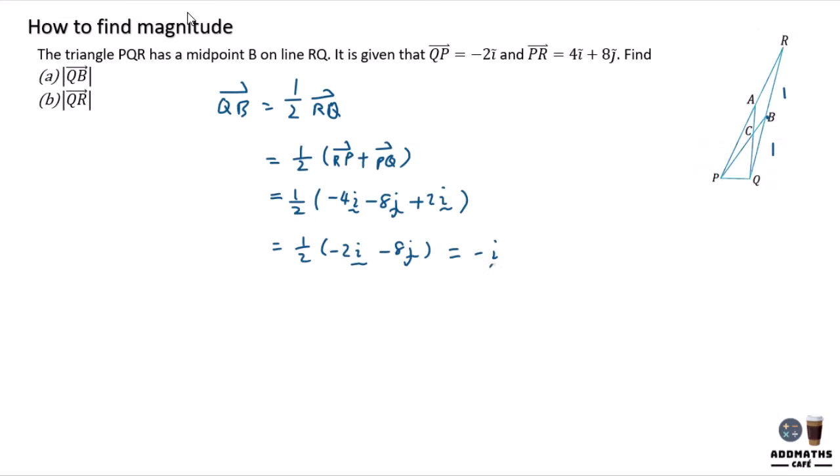And finally give an answer of negative i, negative 4j. Now we are required to find the magnitude of QB, which is the distance. Open the square root, apply the formula with the value of i and j. The value of i is negative 1.